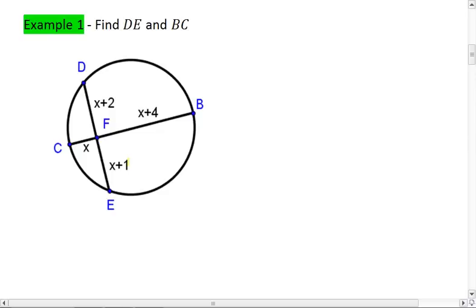For DE, we're looking for this entire chord here. And for BC, we're looking for this entire chord. What that means is that we need to solve for X. We realize we have two intersecting chords.